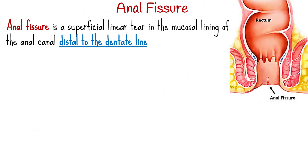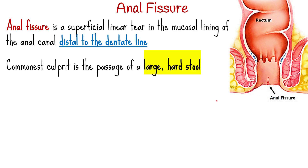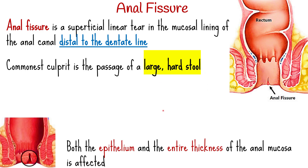An anal fissure is a superficial linear tear in the mucosal lining of the anal canal, usually distal to the dentate line. It is most commonly caused by passage of a large, hard stool. Normally, only the epithelium is affected, but in the long run, the entire thickness of the anal mucosa is affected.